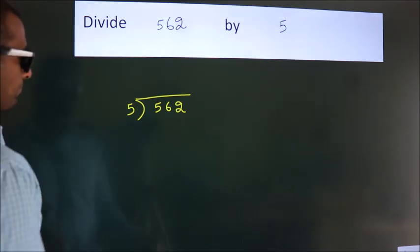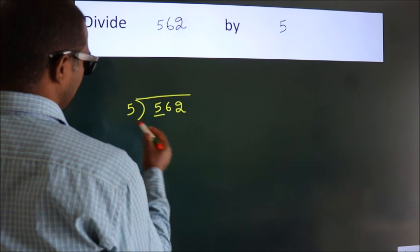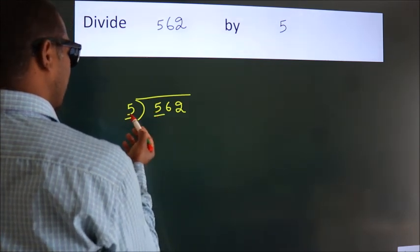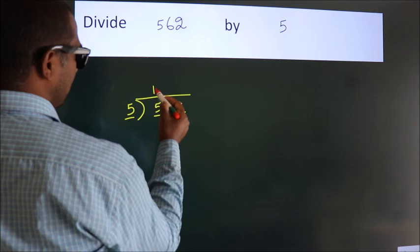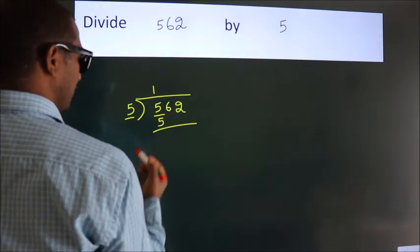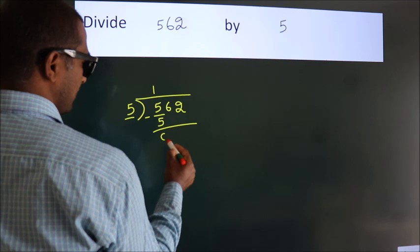Next. Here we have 5, here 5. When do we get 5? In 5 table. 5 once, 5. Now we should subtract. We get 0.